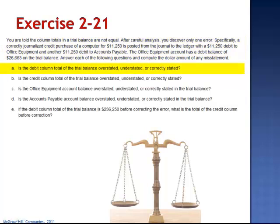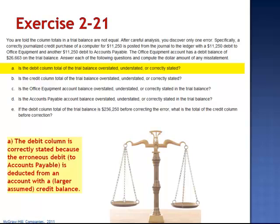Letter A asks if the debit column total of the trial balance is overstated, understated, or correctly stated. The debit column is correctly stated because the erroneous debit to accounts payable is deducted from an account with a larger assumed credit balance.